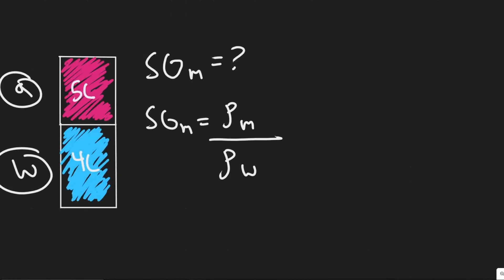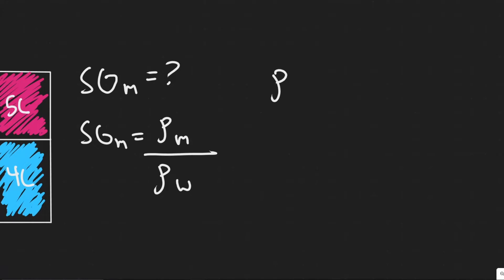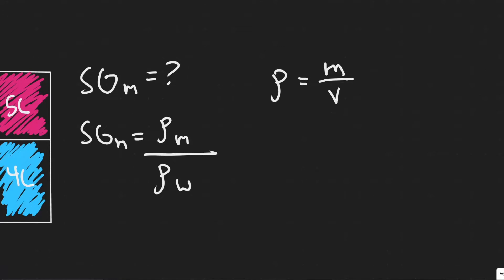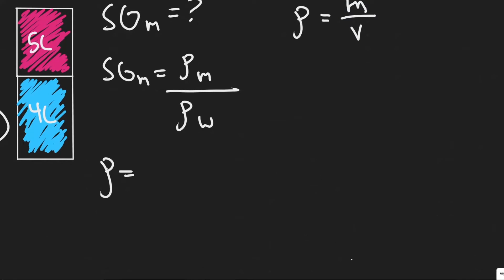This is the main formula we're going to use to solve this. We're also going to use the formula density, denoted with rho (ρ), equals mass over volume. We know the density of water, but we do not know the density of the mixture. So in order to solve for this, we need to get the density of the mixture.